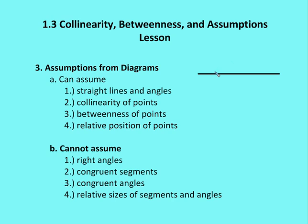You can also assume collinearity of points. So if I draw a point here and a point here, you can assume that those are collinear. You can also assume that if I have this line and I have another point, you can assume that this point is between A and B. And you can also assume the relative positions of points, meaning point C is between A and B, but you can't assume that this length is going to be the same as this length, even if it looks that way.